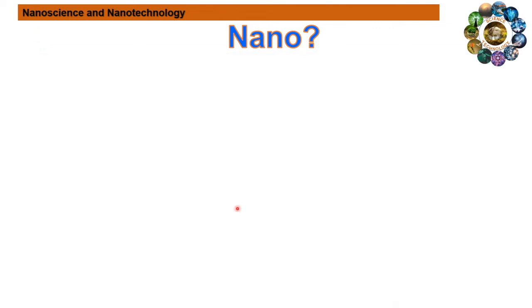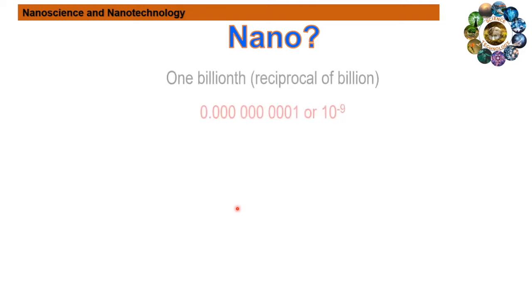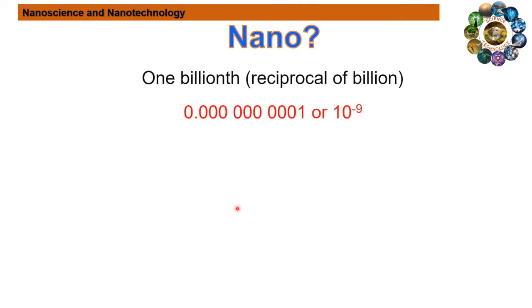In today's scientific domain, the word nano describes a physical length scale. Nano is a prefix, like milli or centi, representing one billionth of a meter — that is 10 to the power of minus nine meters. To understand the nanoscale and what makes it unique from other metric scales, here I am showing a basic concept of length scale with several examples.